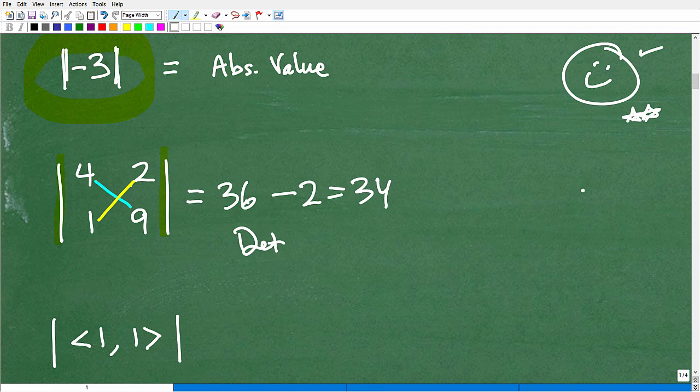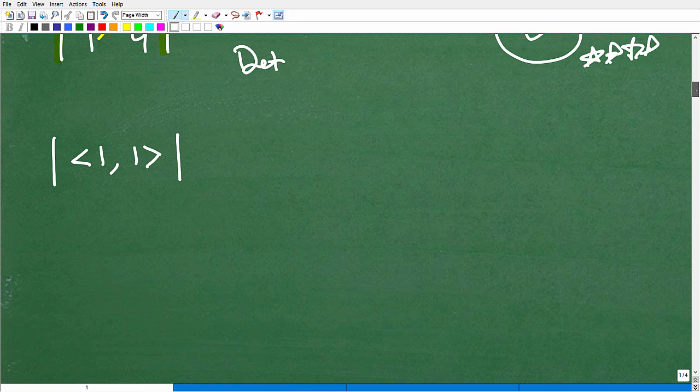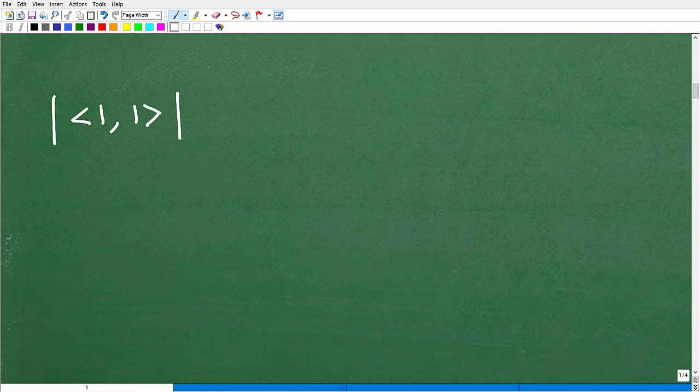Okay, so these little bars right here mean the determinant of a matrix when they're used in this way. And if you knew that, I must give you a bigger smiley face right here. And as a matter of fact, I'll give you two, three, I'll give you three check marks and three stars. That's pretty good. Okay, now, again, if you haven't taken a course where you've learned about matrices, you're going to see this. Okay, so when you do see this, don't confuse this as absolute value.